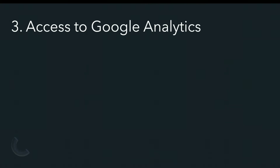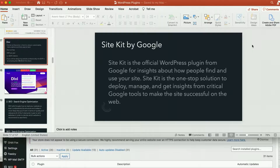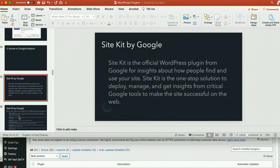The third type of plugin you need is access to Google Analytics — you need to be able to see what is happening in Google. I think you need to get Site Kit by Google; it's the official WordPress plugin. You can get insights on your dashboard in WordPress, and it will also easily take you into Google to look at more complete data.